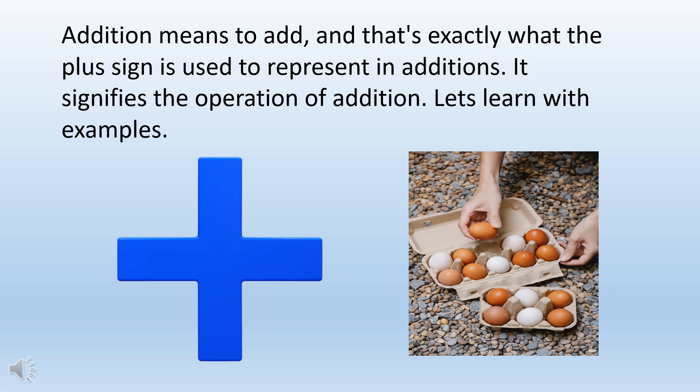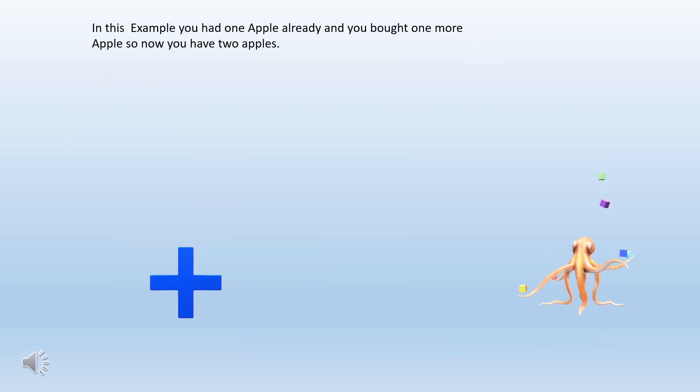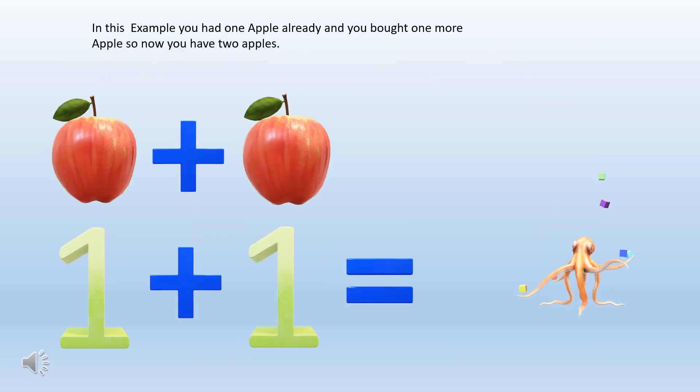Let's learn with examples. In this example you had one apple already and you bought one more apple so now you have two apples.